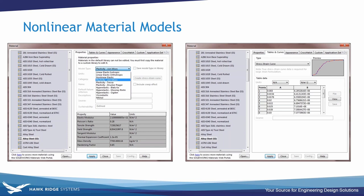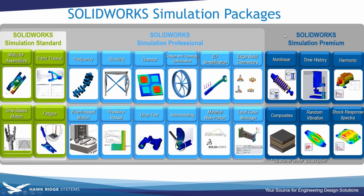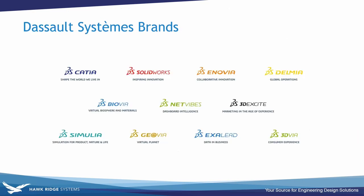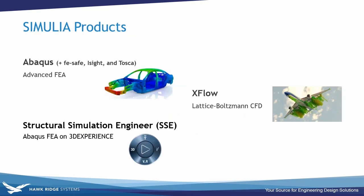Of course we've got non-linear capabilities within SolidWorks Simulation Premium, but we have these Simulia tools as well, and that's what I'm responsible for here at Hawkridge. Dassault Systems, the parent company of SolidWorks, has a number of brands for different things. SolidWorks is probably their most popular brand, and Simulia is another — that's their lineup for realistic simulation. Within the Simulia brand there are a number of different products. Some we're going to mention today are Abacus, probably the most famous Simulia product — it's an advanced FEA tool — Structural Simulation Engineer, and XFlow, which is a CFD tool.